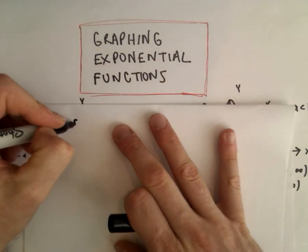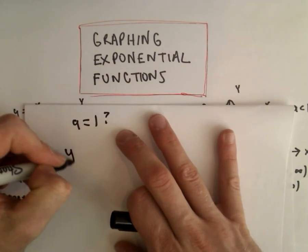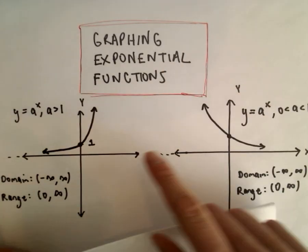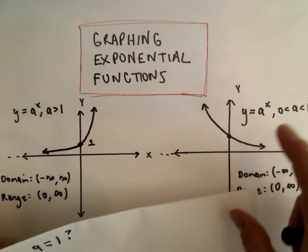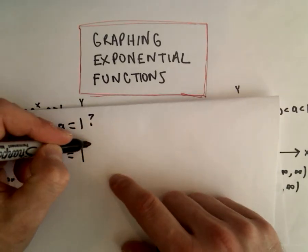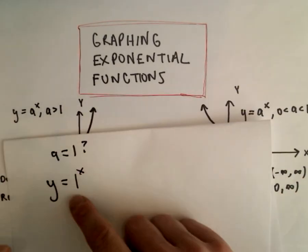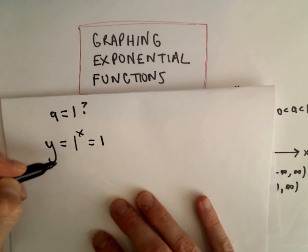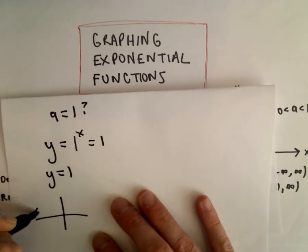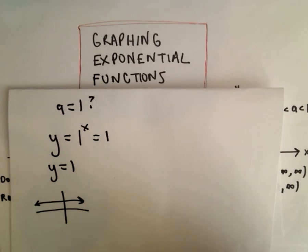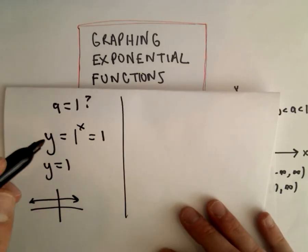Why don't we let our A value equal 1? If you plug in 1, you would get Y equals 1 to the X, and 1 to any power is just 1, so you're just getting the graph of Y equals 1, which is just a horizontal line. That's not an exponential function, so that's why we leave A equals 1 out.